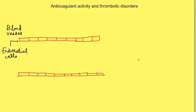Whenever injury to blood vessels happens, certain mechanisms get activated to minimize and stop blood loss. A question arises: why do these processes start only after vessel injury, and why does a clot not form without it? This is because of a crucial balance maintained by anticoagulant and pro-coagulant activities.